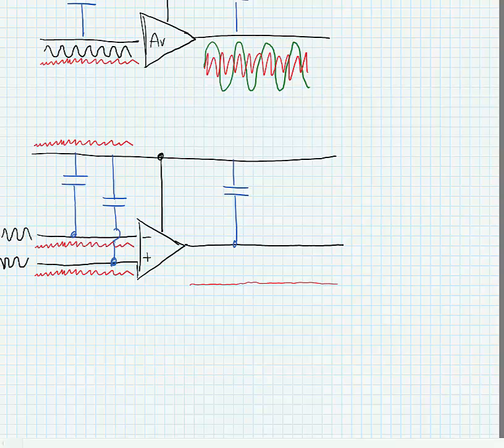However, the signal level is going to be very big because the input signals are differential, so they're opposite in phase. So we have a very big input and a very small amount of noise.